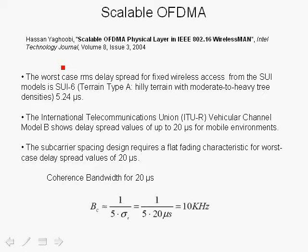Before we proceed, let's take a look at what kind of RMS delay spread we may encounter in a mobile environment, or what is one of the worst-case situations. According to the Stanford University Interim Model No. 6, which was a Terrain Type A — hilly terrain with moderate to heavy tree densities — the RMS delay spread was 5.24 microseconds.